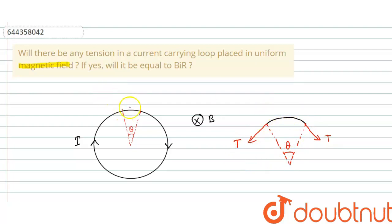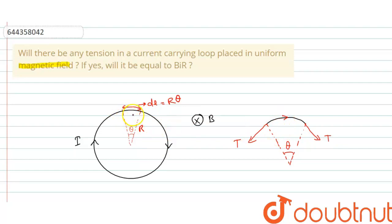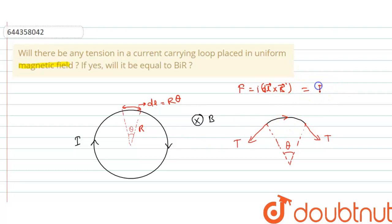The length of this small section dl is equal to R·θ. The force acting on this small section is given by the formula F = i·dl×B, which equals i·dl·B·sinθ. Since dl is along the current direction and B is perpendicular to the plane, θ = 90°, so F = i·dl·B.